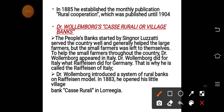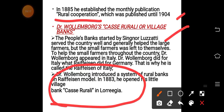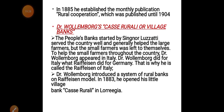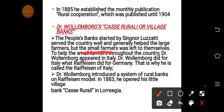Leon Wollemborg was an Italian economist and politician who contributed greatly to cooperative enterprises, particularly in rural areas. In 1885 he started a monthly publication called 'Rural Cooperation,' which was published until 1904. While Luzzatti focused more on larger farmers, Wollemborg focused on small farmers and small landowners, similar to Raiffeisen's model in Germany. For this reason, Wollemborg is also called the 'Raiffeisen of Italy.'